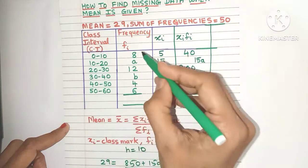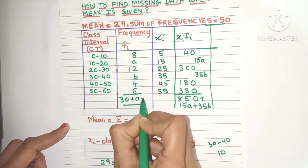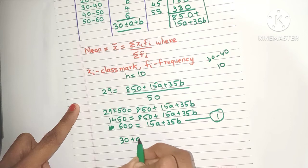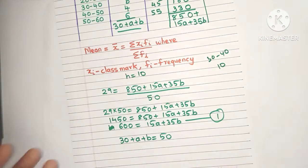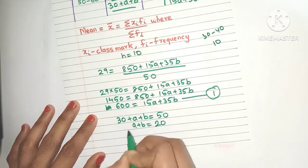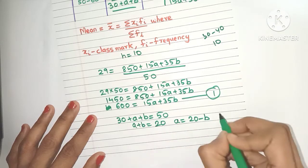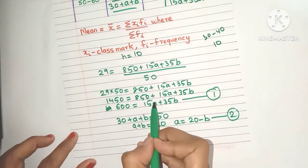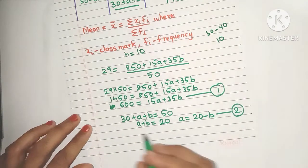When you add all these, first add the numbers. You'll get 30 plus a plus b. This is sigma fi. So 30 plus a plus b equals 50 because both are the sum of frequencies. Bring all the numbers to one side and you'll get a plus b equals 20. Let's write a as 20 minus b. This is equation 2. Now can we substitute 20 minus b for a in equation 1? Definitely we can.